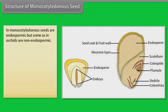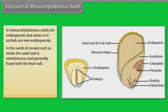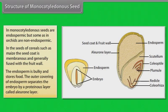Monocotyledonous seeds are endospermic, but some, as in orchids, are non-endospermic. In the seeds of cereals such as maize, the seed coat is membranous and generally fused with the fruit wall. The endosperm is bulky and stores food. The outer covering of the endosperm separates the embryo by a proteinous layer called the aleurone layer.